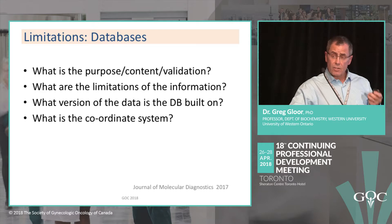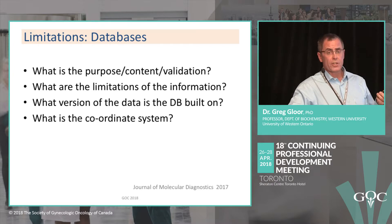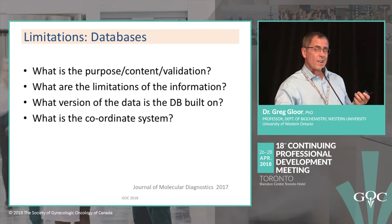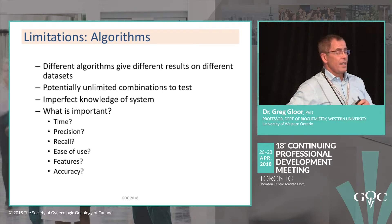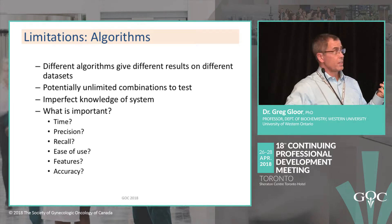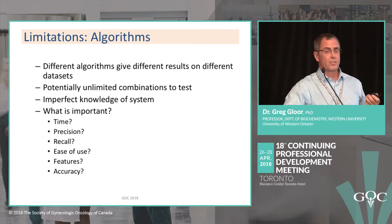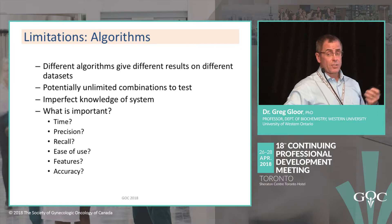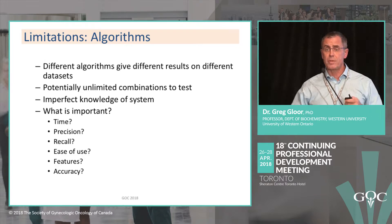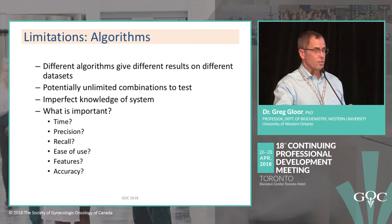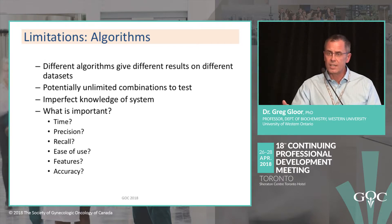The databases themselves are a limitation. If the databases are curated, you need to know how they're curated: the source of the information, its purpose, how it was validated, its limits, where it came from, and what version it is. On algorithms — this is a big one — different algorithms give different results on the same dataset, never mind different datasets. There are potentially unlimited combinations of algorithms to test. We have imperfect knowledge of the system, and what's important to the algorithm developer — speed, precision, recall — differs from what's important to you: is it easy to use, can I change its features, does it actually work?